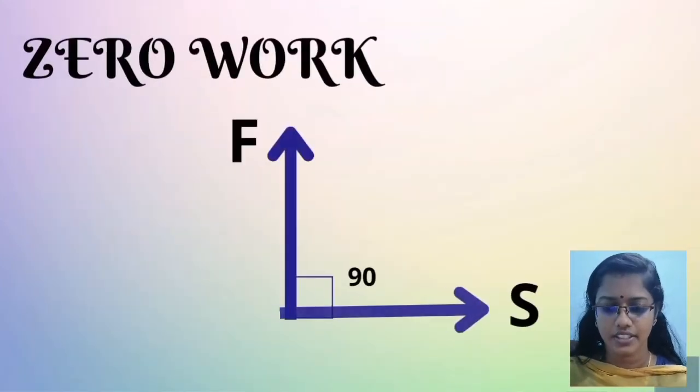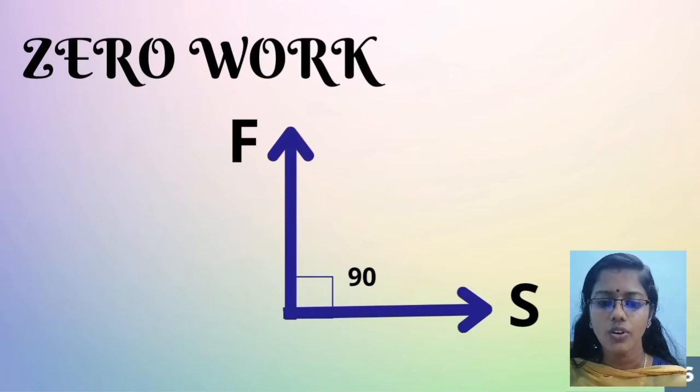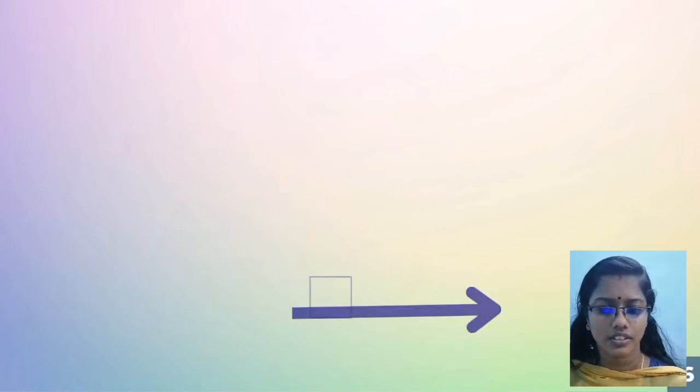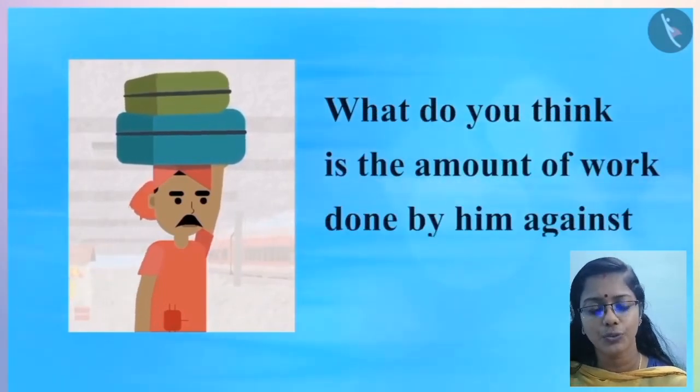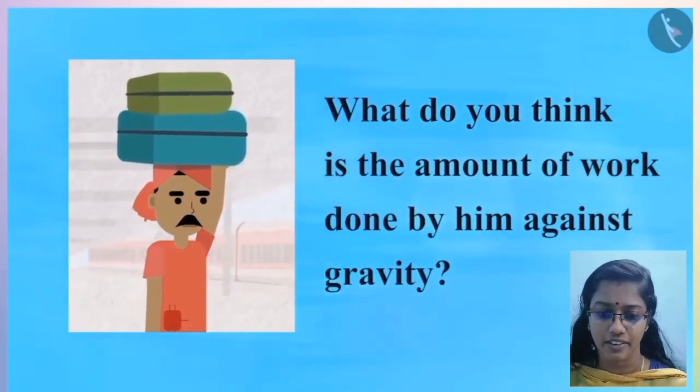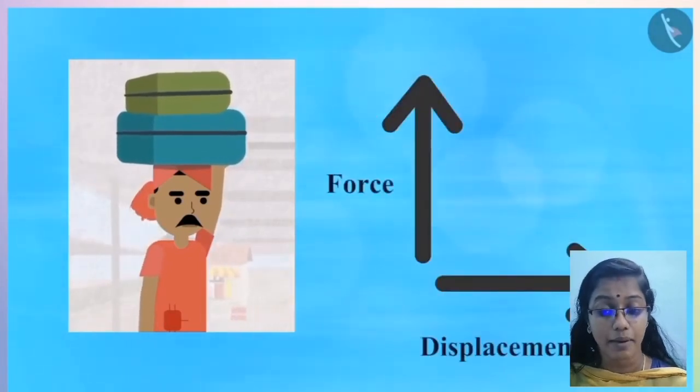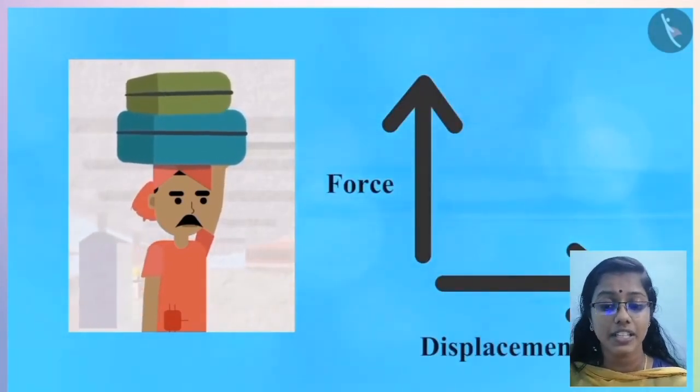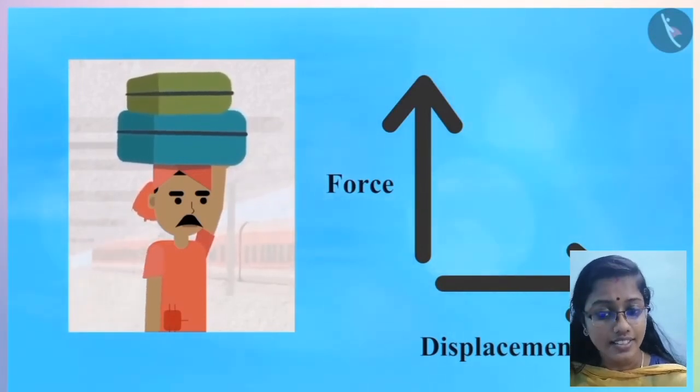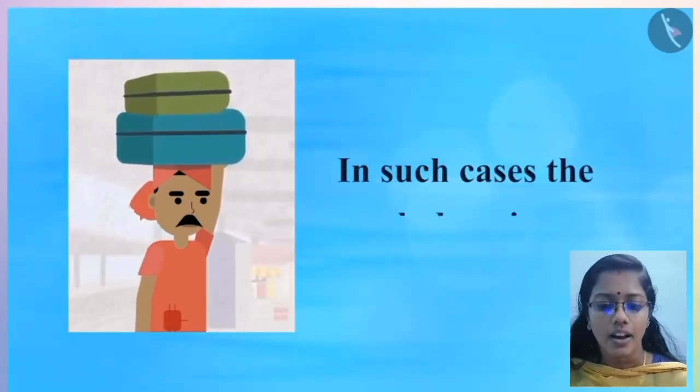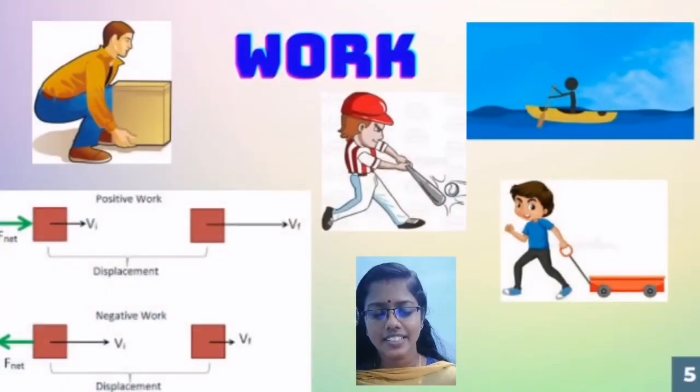Zero work. Now, take a look at this query. What do you think is the amount of work done by him against gravity? Here, he applied a force in an upward direction and his displacement is perpendicular to the applied force. In such cases, the work done is said to be zero.